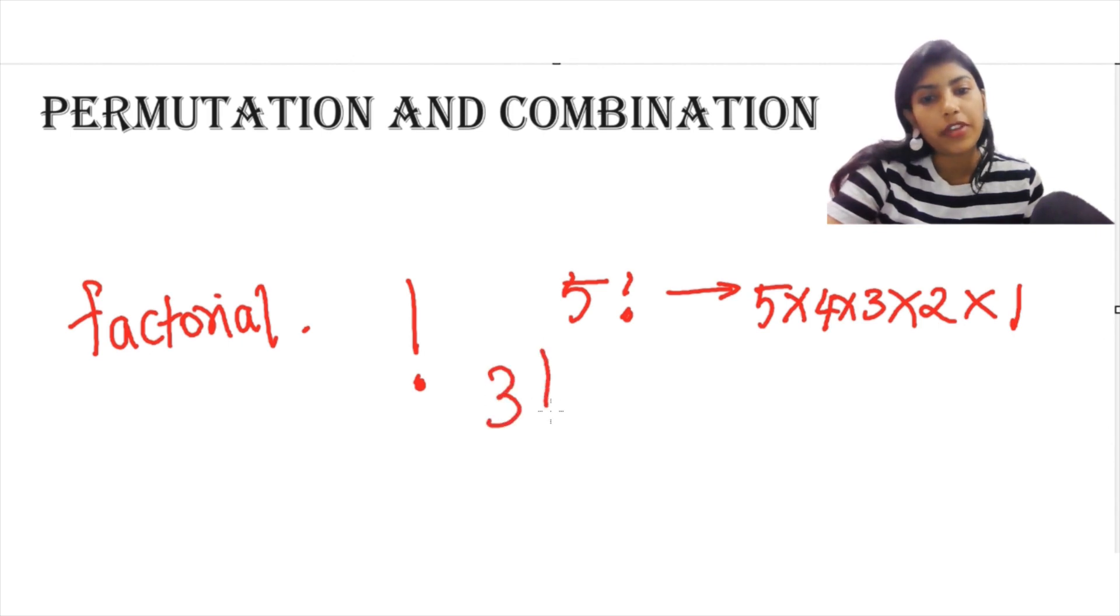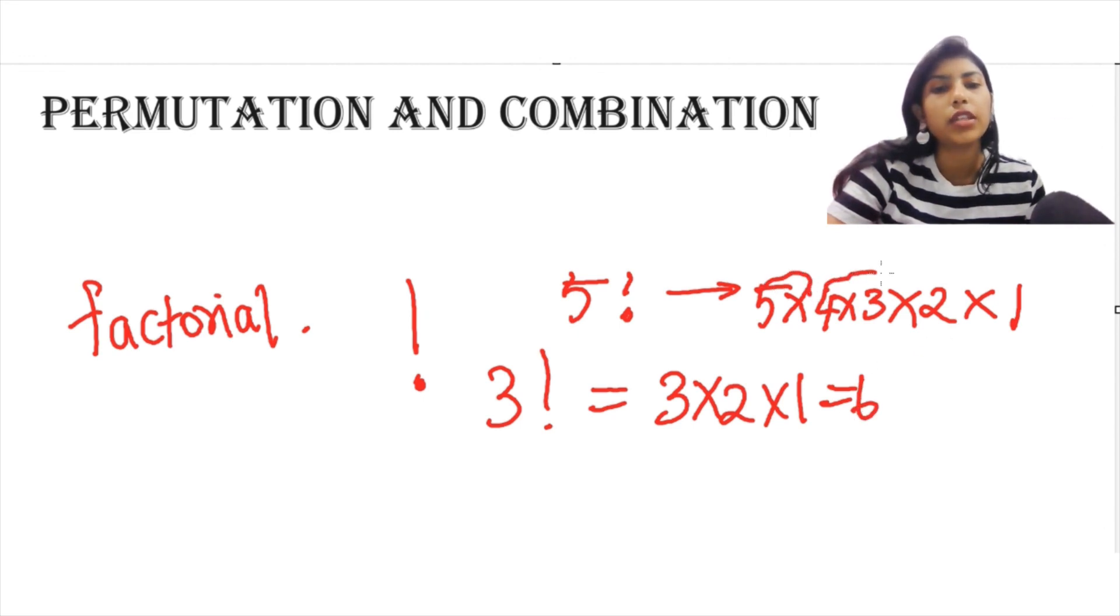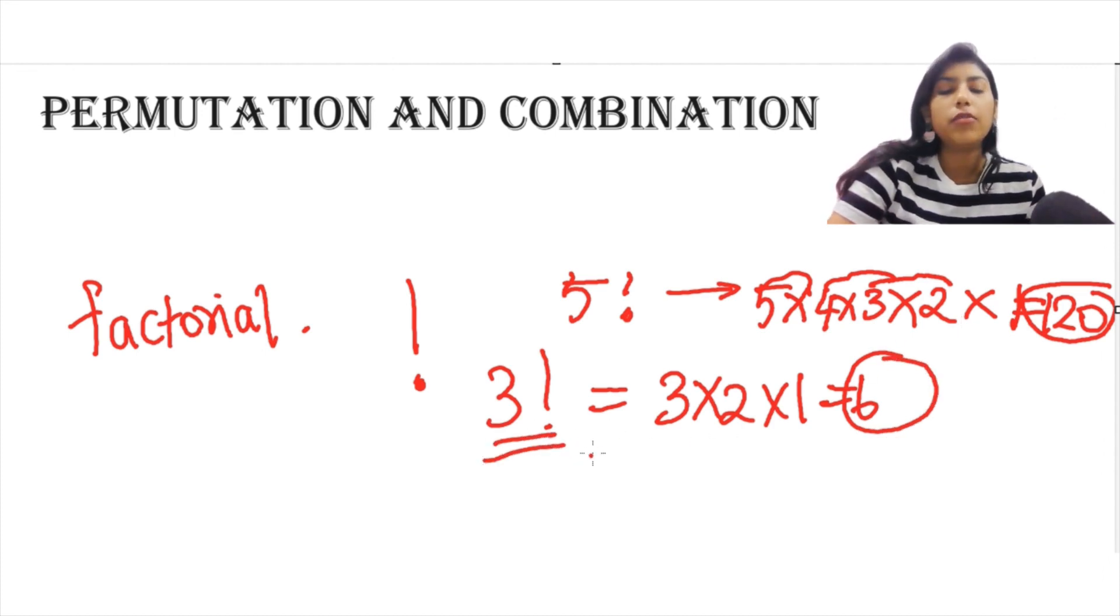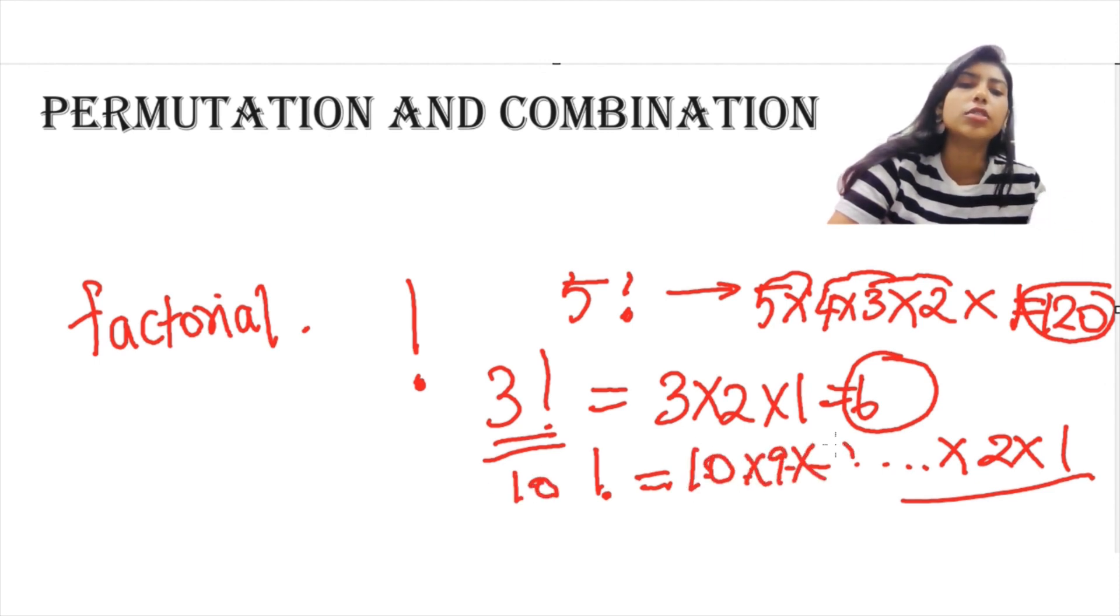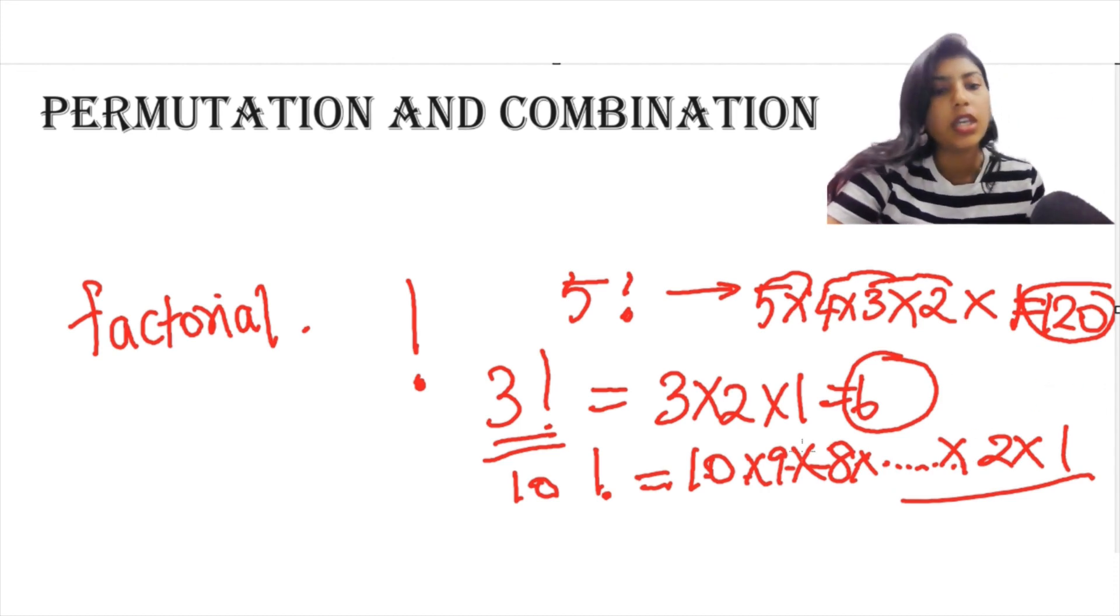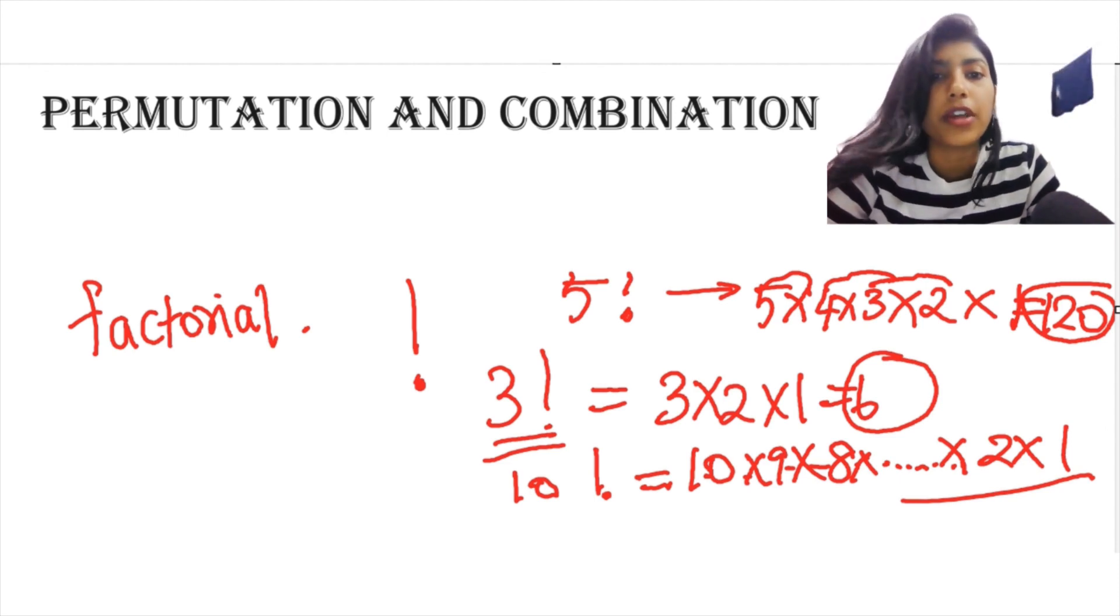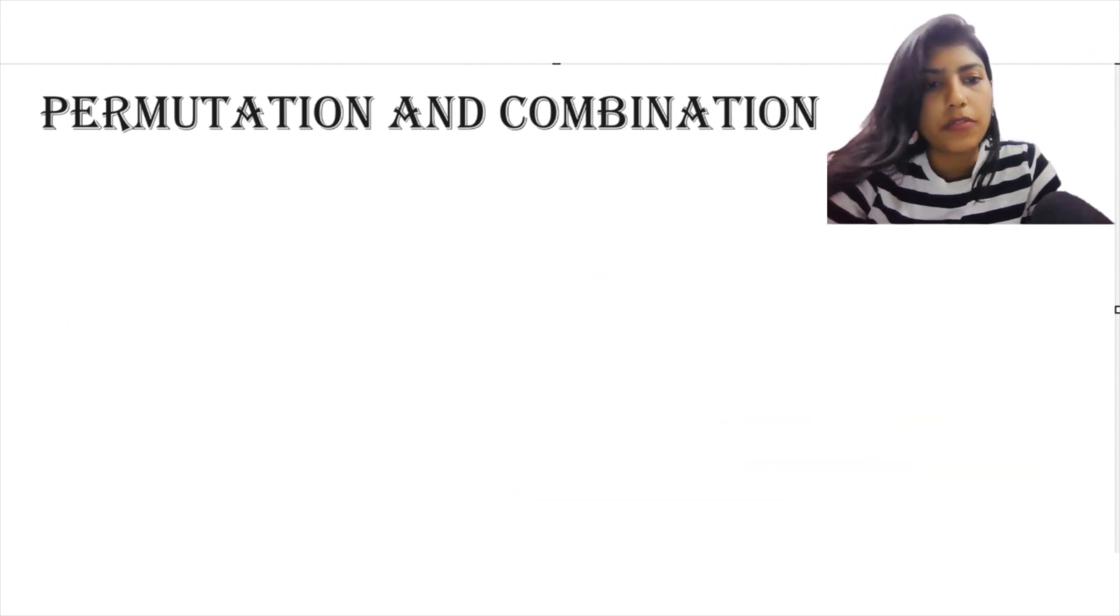I can say 5 factorial which will be represented as 5 into 4 into 3 into 2 into 1. And if I say 3 factorial, that means it's 3 into 2 into 1, that is 6. And 5, 4's are 20, 3's are 60, 2's are 120. So basically, the value of 5 factorial is 120 and the value of 3 factorial is 6. Anywhere you see this factorial, you just have to keep reducing the number until it reaches 1. I can say 10, so it will be 10 into 9 into 8 into 7 into 6 into 5 into 4 into 3 into 2 into 1. That is how factorial works. Now, why I want you to know the concept of factorial is simple because the formulas of permutation and combination contains factorial.